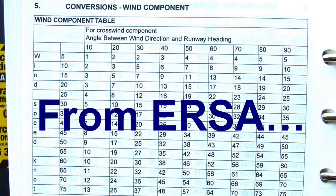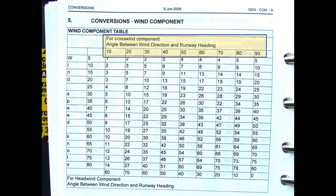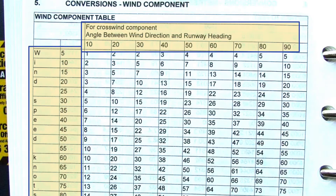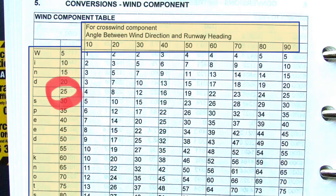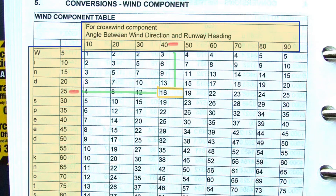Here is the crosswind table from URSA. It's quite easy to use. Along the top you'll see the angle between the wind direction and the runway heading. Down the side we have the wind speed in knots. As an example, if the wind speed is 25 knots and the angle between the wind direction and runway direction is 40 degrees, then the crosswind component will be 16 knots.